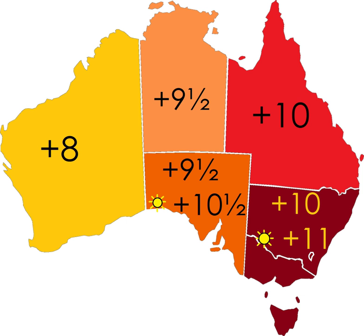Since 1899, the only major changes in Australian time zones have been the setting of clocks to one half-hour earlier than Eastern Time on the territory of Lord Howe Island, and Norfolk Island changing from UTC+11:30 to UTC+11 on 4 October 2015. When abbreviating 'Australian Central Time' and 'Australian Eastern Time' in domestic contexts, the leading 'Australian' may be omitted; however, the prefix 'A' is often used to avoid ambiguity with the time zone abbreviations 'CST' and 'EST' referring to the Central and Eastern Time Zones in North America.